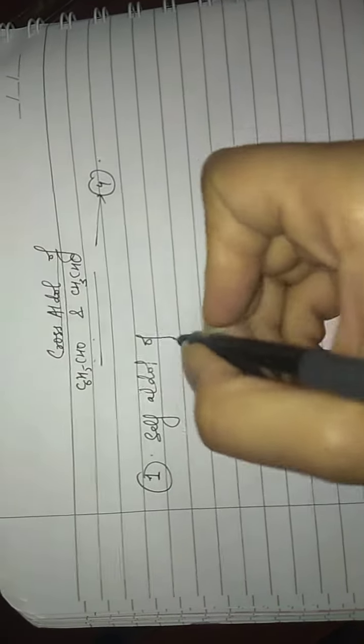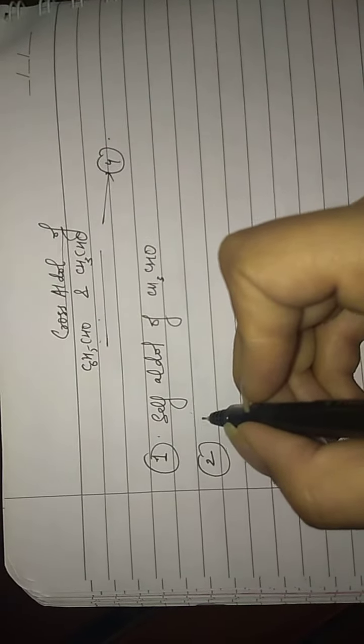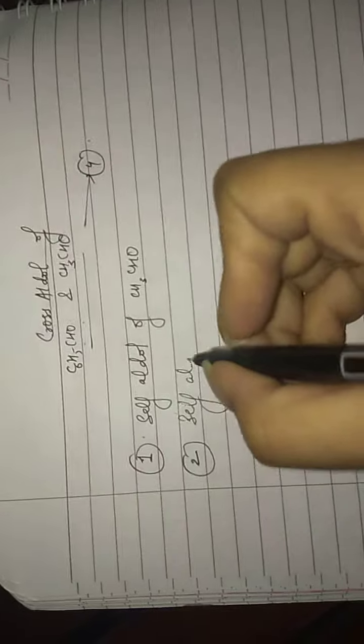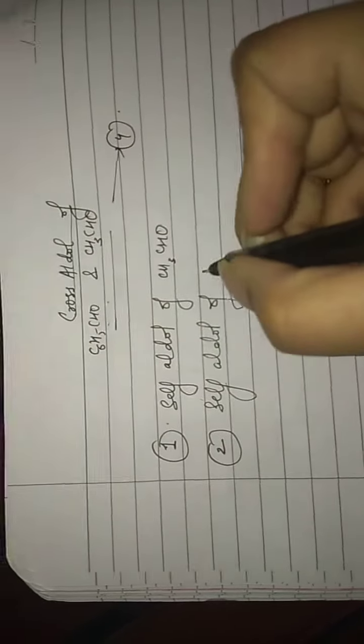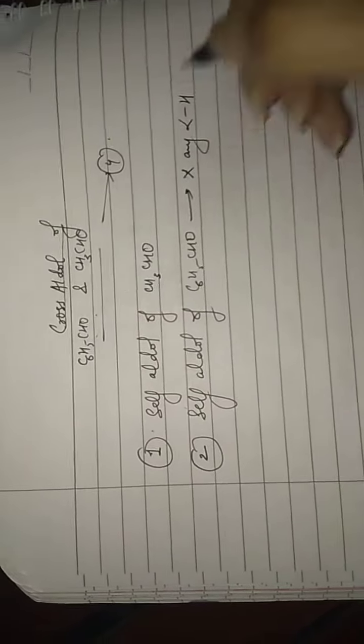Second product should be formed by self-aldol of C6H5CHO, but C6H5 does not possess any alpha-H, so this will not undergo aldol condensation.